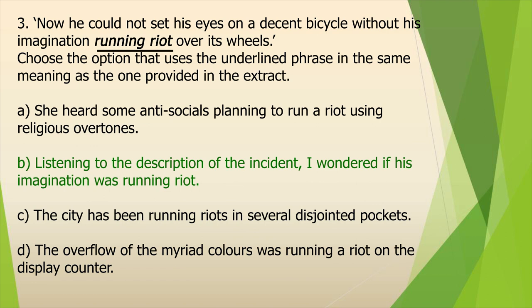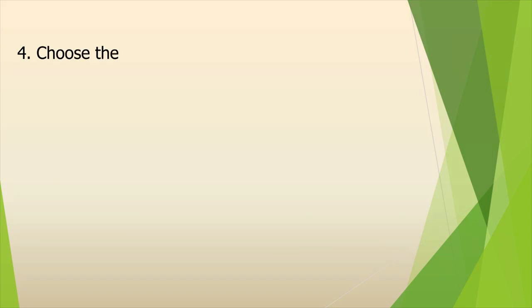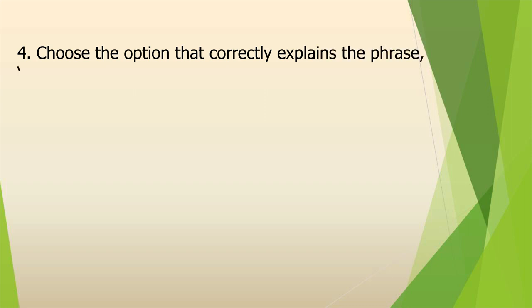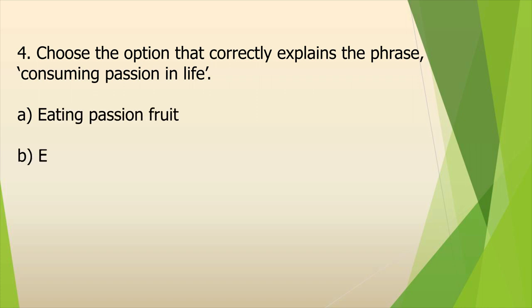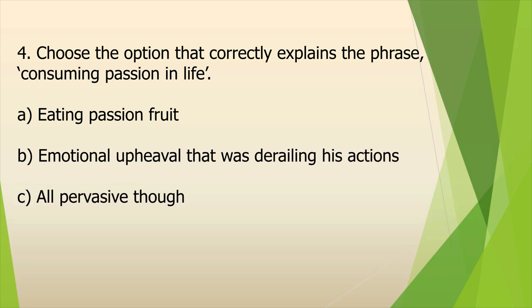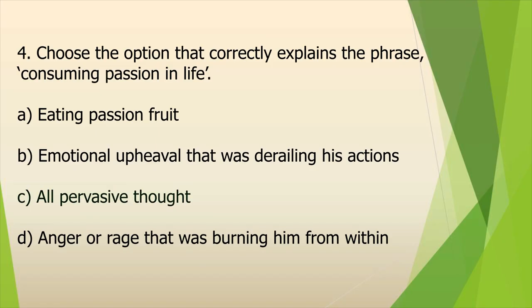Moving to the next question: Choose the option that correctly explains the phrase 'consuming passion in life.' This is also a multiple choice question. The options are: A) eating passion fruit, B) emotional upheaval that was derailing his actions, C) all-pervasive thought, D) anger or rage that was burning him from within. The aim here is that the student must be able to analyse the gathered information from the given passage to choose the best-suited option. The correct option is Option C.